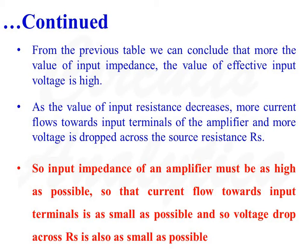As the value of input impedance decreases, more current flows towards the input terminals of the amplifier, and so more voltage is dropped across the source resistance RS. Therefore, input impedance of an amplifier must be as high as possible so that current flow towards the input terminals is as small as possible, minimizing the voltage drop across RS.